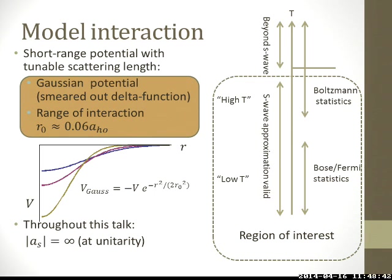We are limiting to the S-wave approximation, which means the potential we are considering is short-range. We chose the Gaussian interaction potential, which is essentially a smeared-out delta function. The range of interaction we are considering is very small — for a typical value, it will be 0.06 harmonic trap lengths. Throughout this talk, I am working in the unitary regime, where the scattering length is diverging.